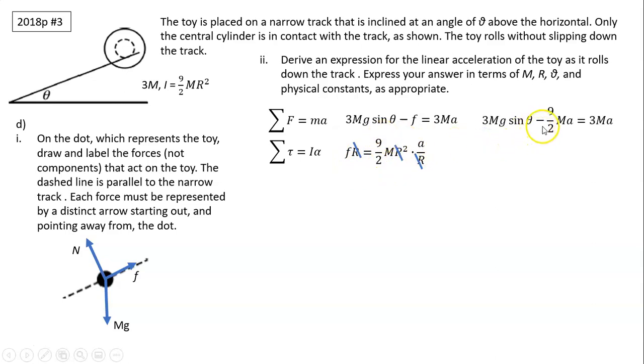Substitute here: 3MG sine theta minus 9 over 2MA equals 3MA. First of all, all the M can cancel. Next one, each term is multiple of 3, so we can cancel out 3. The second term becomes 3 halves. So here is negative 3 halves of A. This is A. You add together.